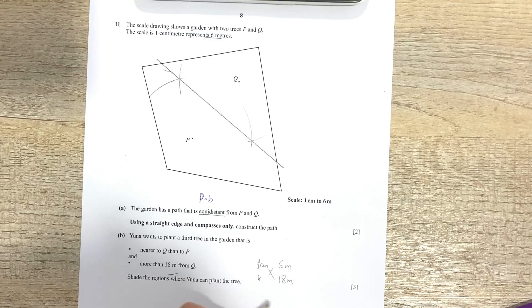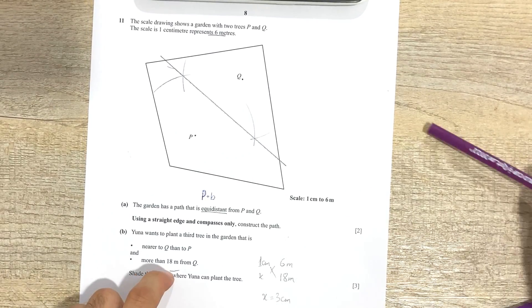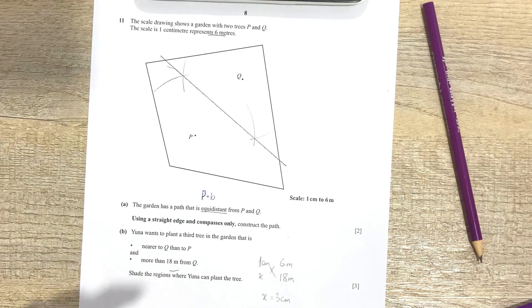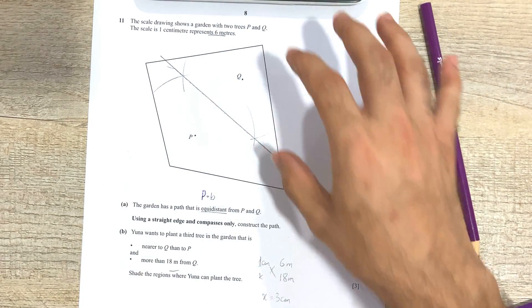18 meters is going to be equal to x. Cross multiply, so you can work this out mentally that x is basically going to be equal to three centimeters. So that means over here we have a certain distance from one fixed point, so that means I'm going to make a circle.